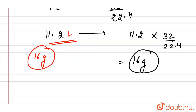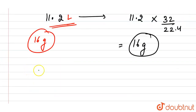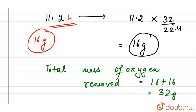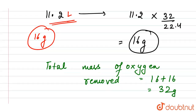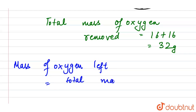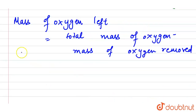So we have 16 grams from the atoms removed and 16 grams from the volume removed. The total mass of oxygen removed is 16 + 16 = 32 grams. The mass of oxygen left equals total mass minus mass removed: 64 − 32.